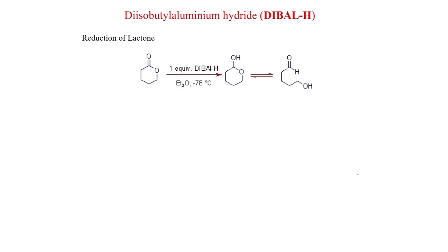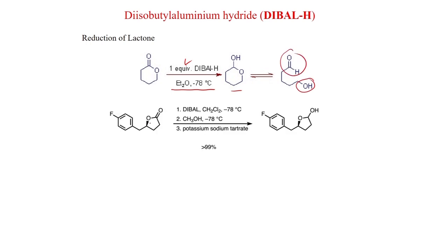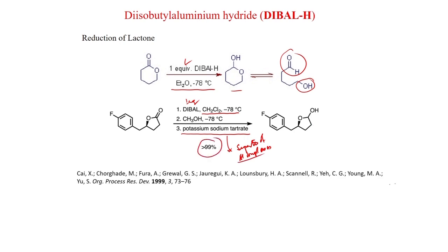Reduction of lactone to lactol is also a very important reaction of DIBAL-H. Using 1 equivalent of DIBAL-H in diethyl ether at −78 °C you get the lactol, which can be in equilibrium with its open-chain hydroxy-aldehyde form. For example, butyrolactone treated with DIBAL-H in dichloromethane at −78 °C, followed by quenching with methanol and potassium sodium tartrate (to separate aluminum complexes formed after the reaction), gives the lactol in greater than 99% yield — published in Organic Process Research and Development.